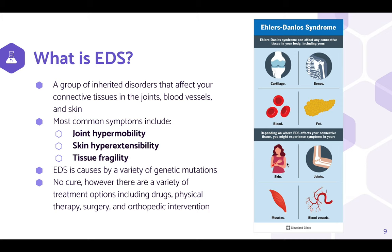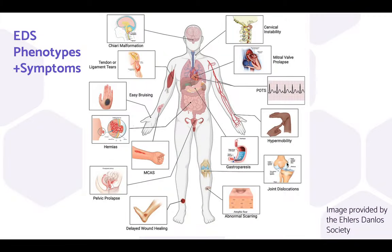Depending on where EDS affects your connective tissue, you might experience symptoms in your skin, joints, muscles, and blood vessels. This image is courtesy of Cleveland Clinic. Here are some phenotypes and symptoms of EDS: Chiari malformation, tendon or ligament tears, easy bruising, hernias, MCAS, pelvic prolapse, delayed wound healing, abnormal scarring, gastroparesis, joint dislocations, hypermobility, POTS, mitral valve prolapse, and cervical instability. This image was provided by the Ehlers-Danlos Society.